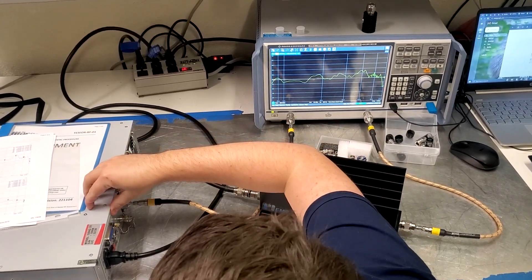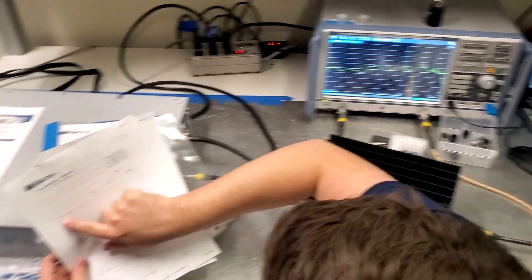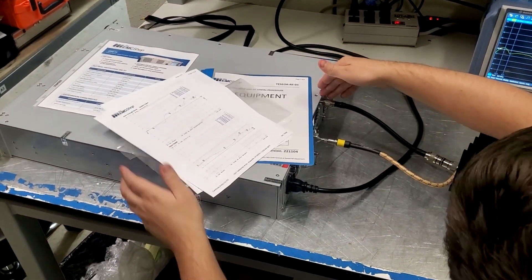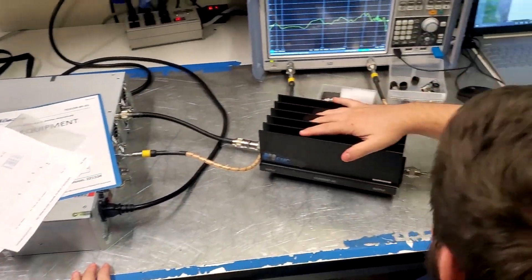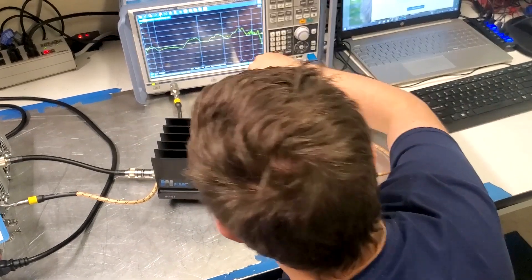Negative 10 is going in. 54 dB of gain. 44 is coming out. It's hitting a 40 dB attenuator. Positive 4 is going in.